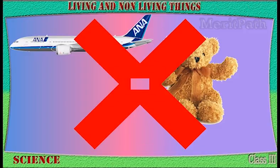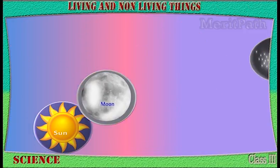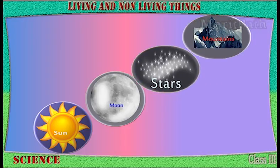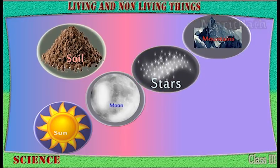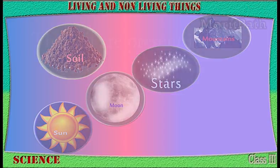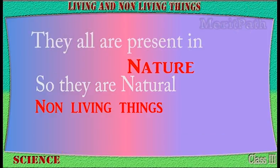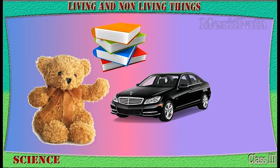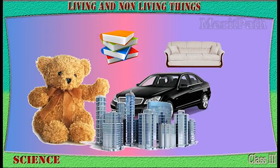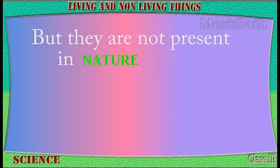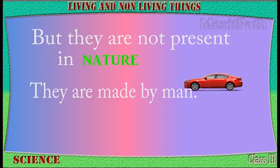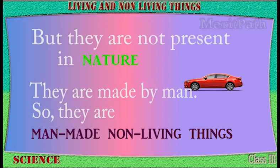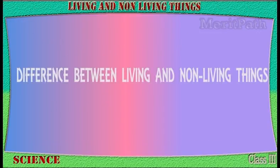Non-living things are those things which cannot breathe, such as the Sun, the moon, stars, mountains, soil, air, and water. These are all present in nature, so they are natural non-living things. Toys, vehicles, books, furniture, and buildings are also non-living things, but they are not found in nature — they are made by man, so they are man-made non-living things.